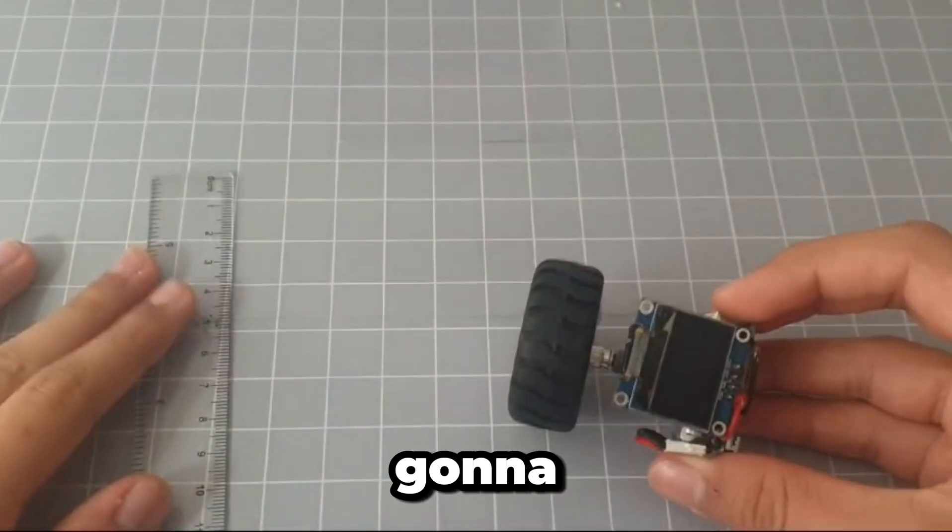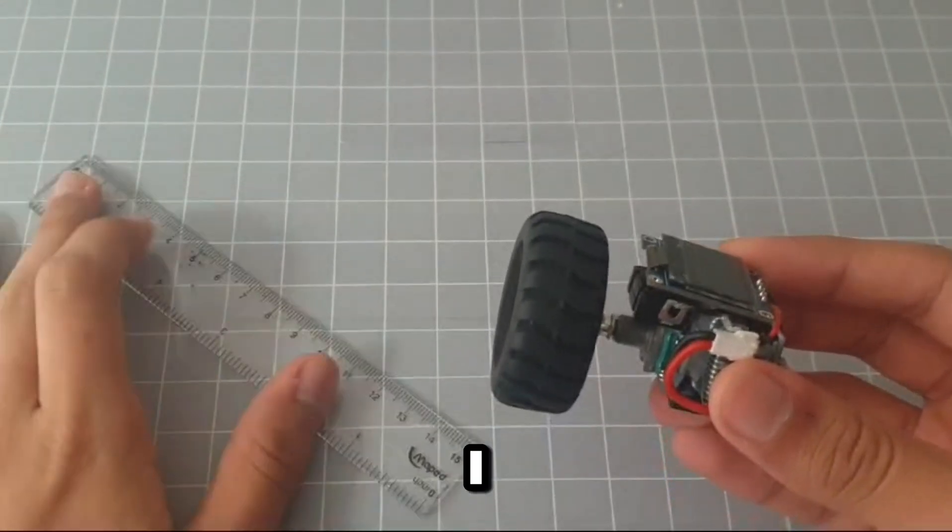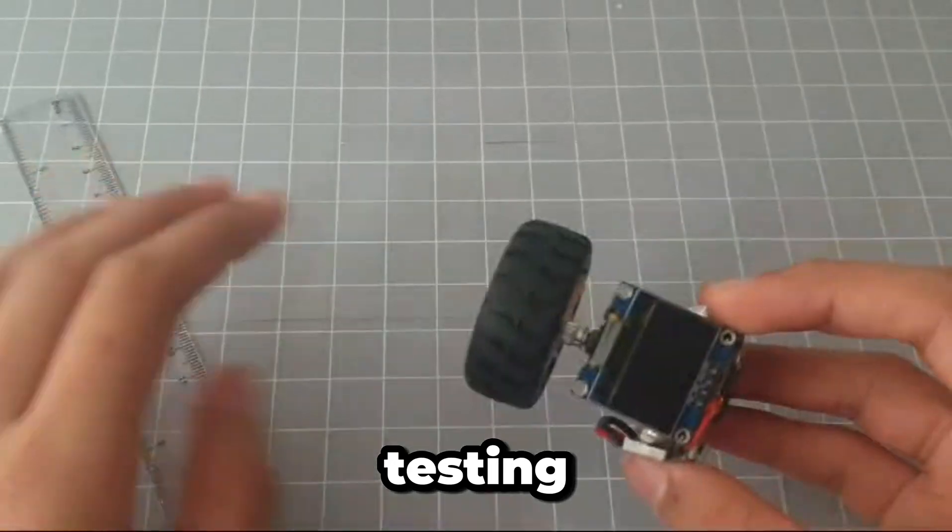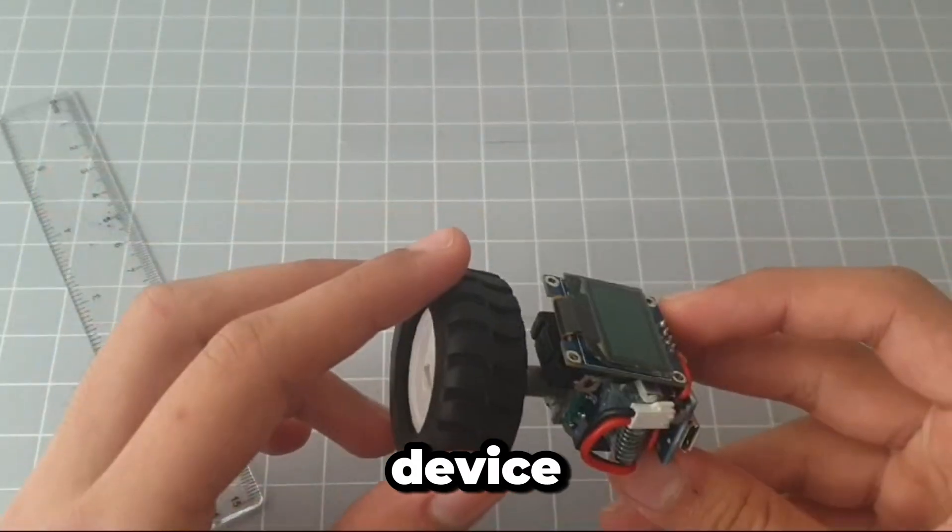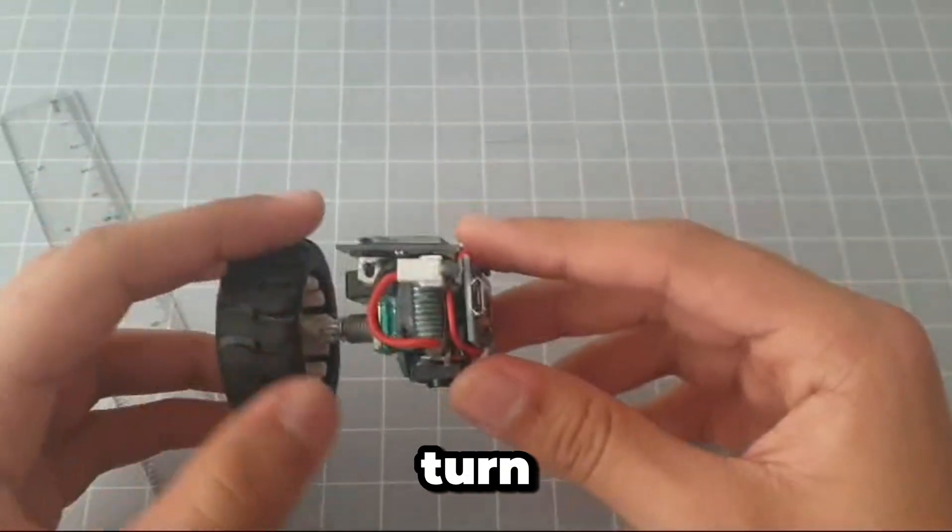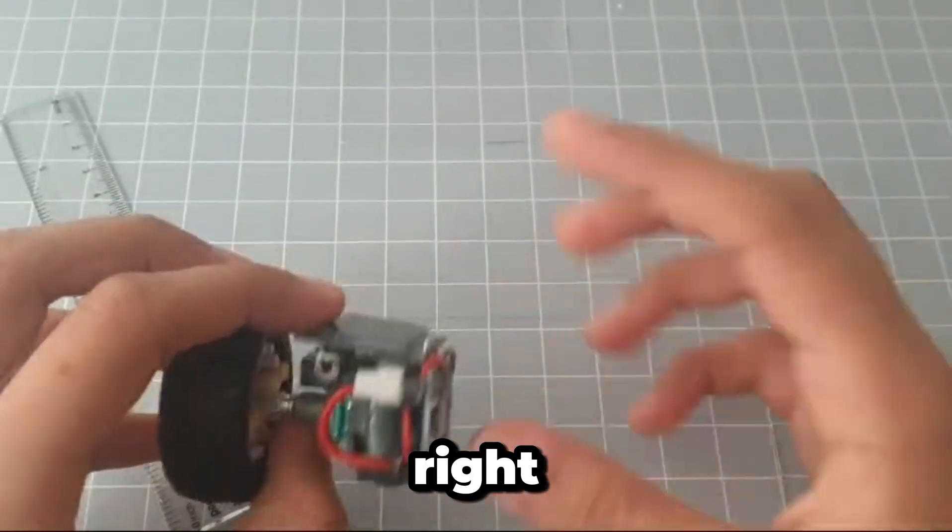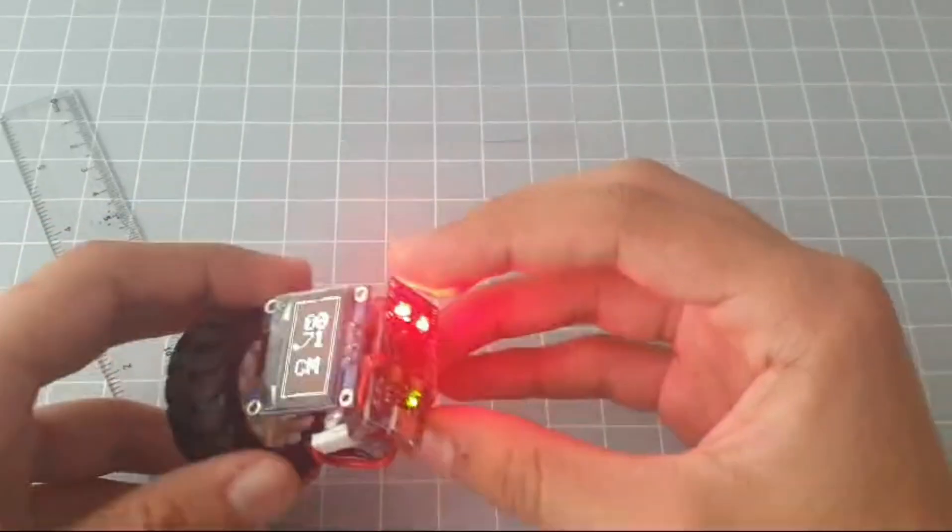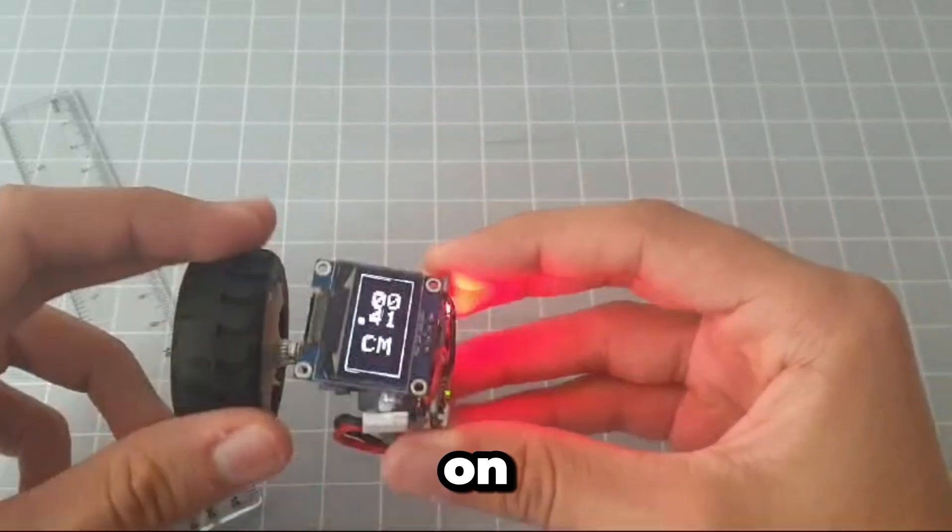Now I'm going to show you how to actually use the device. So I have a ruler here for testing and I have the actual device. So first let's turn the device on, there is a switch right there, so we are just going to click it and as you can see it turns on the device.